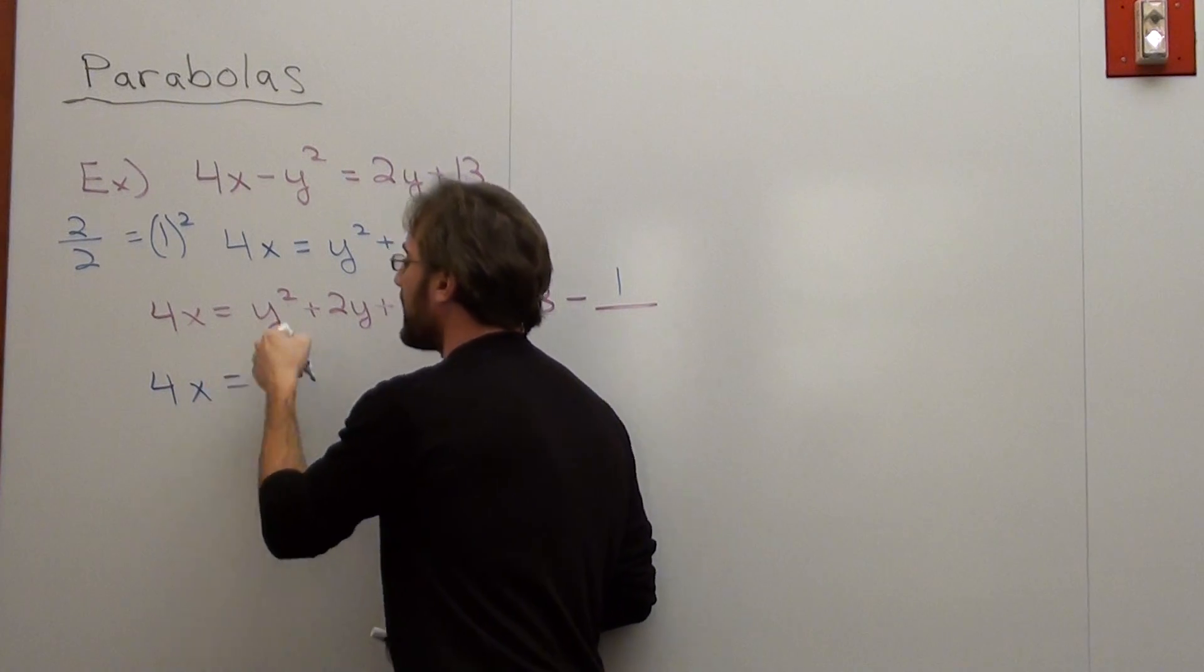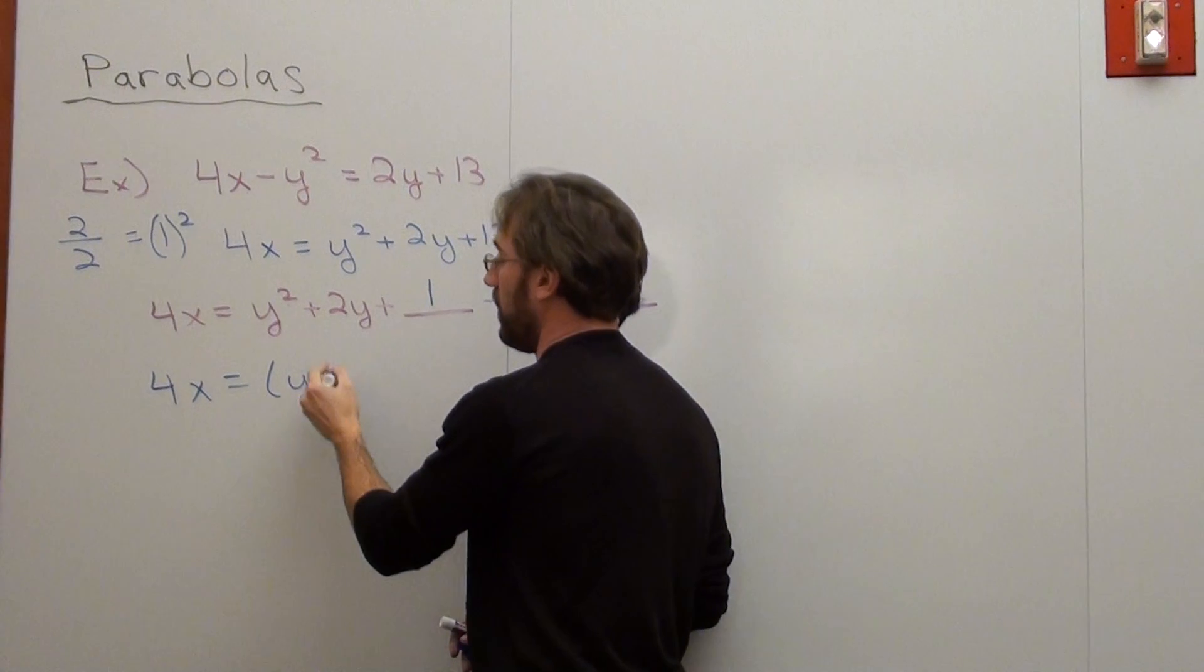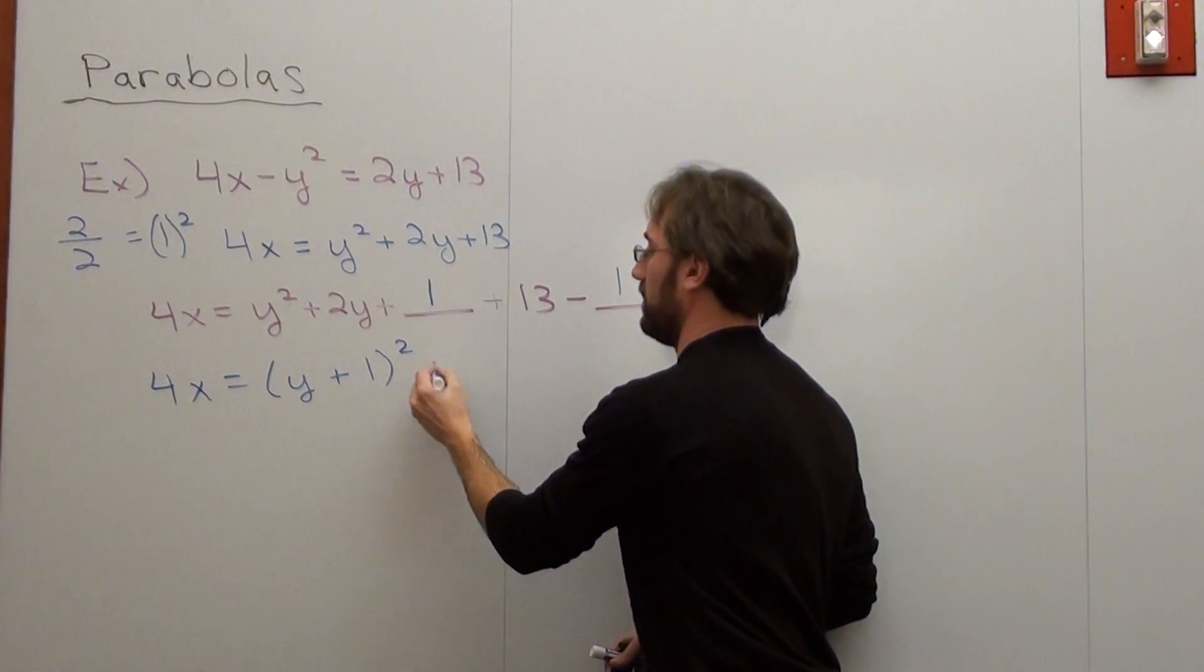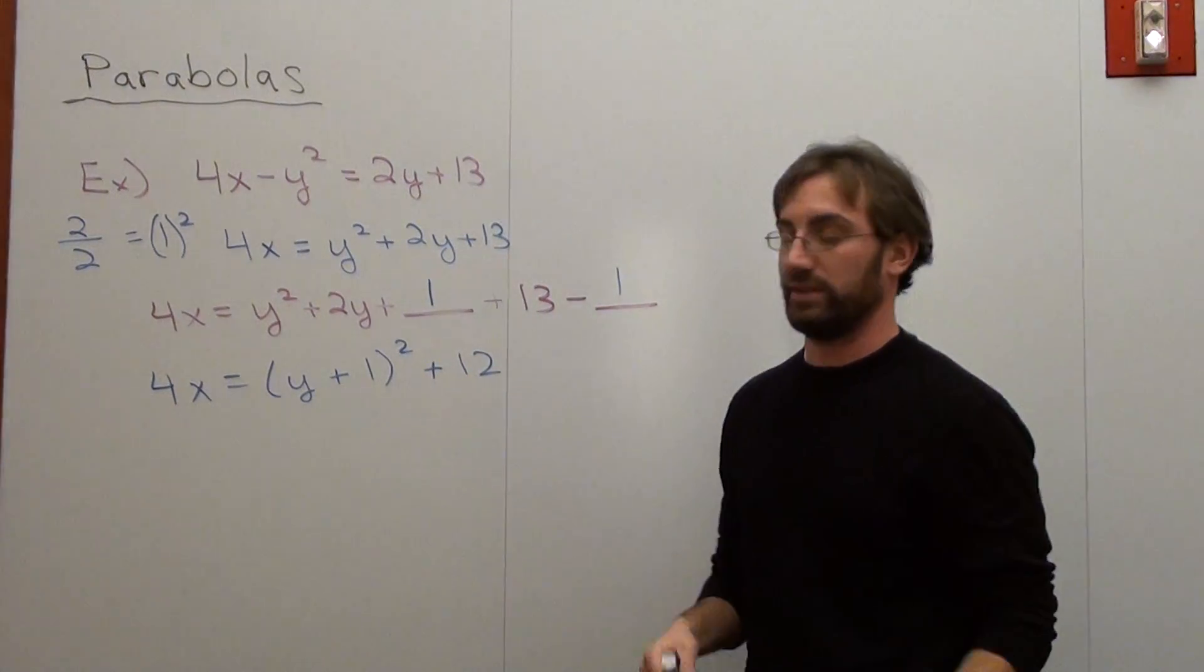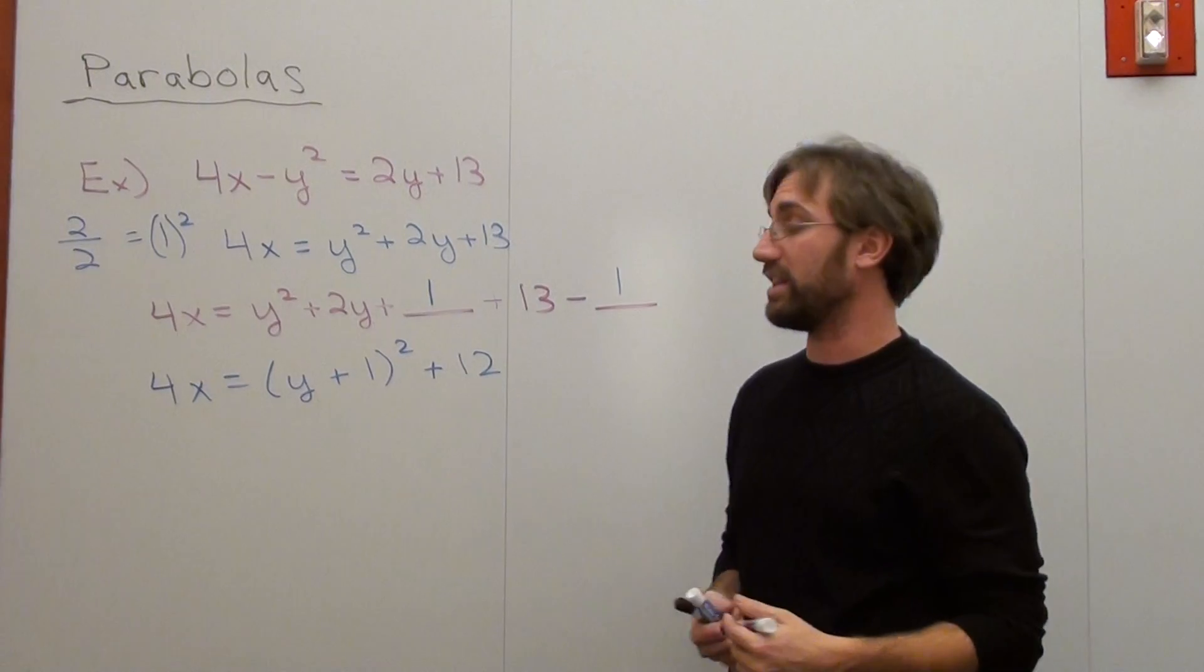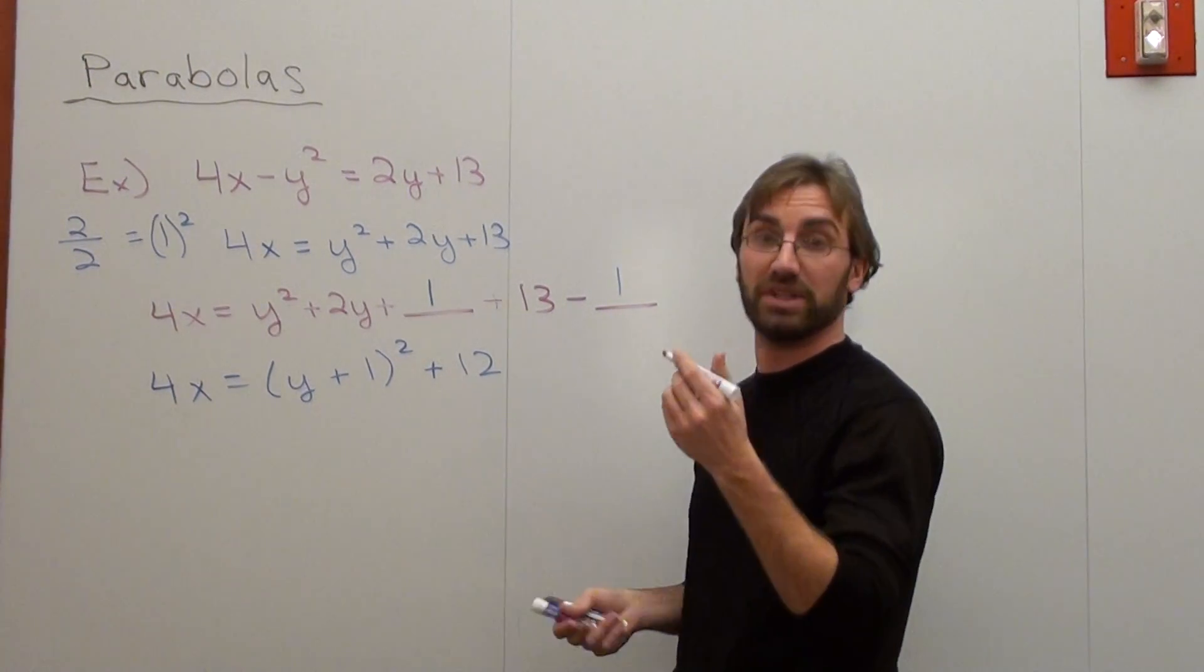4x equals, I can factor y squared plus 2y plus 1. That comes out to be y plus 1 squared. And then I got plus 12 in the end. I didn't actually get it in proper form yet, because now I have to get the x by itself. And it pays to do this last, because it's so much easier on this particular type of problem.